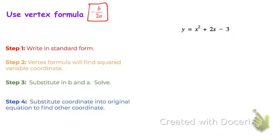So once it's in standard form, we're going to write our vertex formula. But now we know, since the x is what's being squared, that the vertex formula is going to be finding the x-coordinate. If the y was the one that was squared, the vertex formula would be finding the y-coordinate.